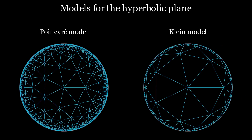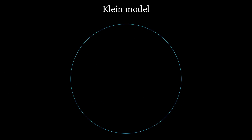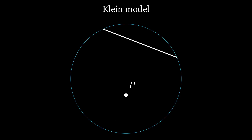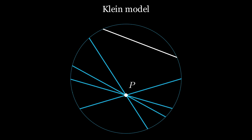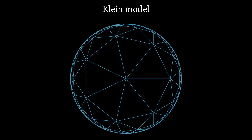Now let us consider the Klein model. We will see strong similarities to the Poincaré model. The biggest difference is that the geodesics here actually correspond to Euclidean lines. As in the Poincaré model, we are limited by the unit circle. Thus the parallel axiom does not apply here either. The Klein model also gives a very distorted representation of hyperbolic space. Here we see the same tiling as before, now in the Klein model. Distances become larger and larger towards the border, making the triangles seem smaller the closer we get to the boundary.